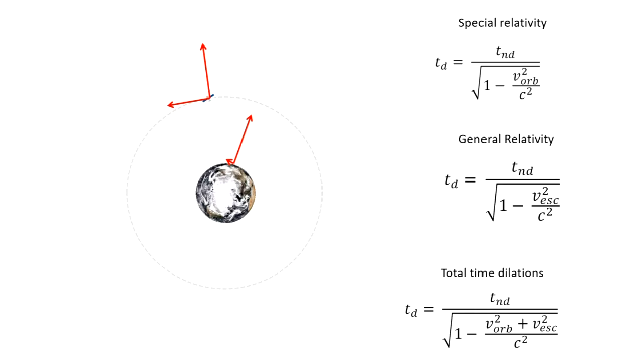If we used the same clock for the satellite and the ground station, they would diverge by 38 microseconds every 24 hours, which would result in an error in position of several miles. This is clearly not acceptable.